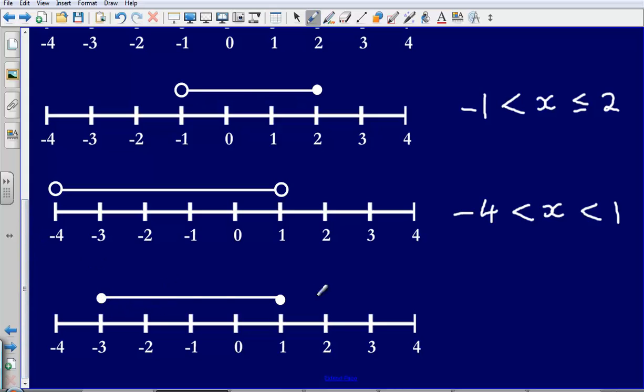Right, last one, we have got negative 3 and we have got 1 and so x is greater than or equal to negative 3 but less than or equal to 1.